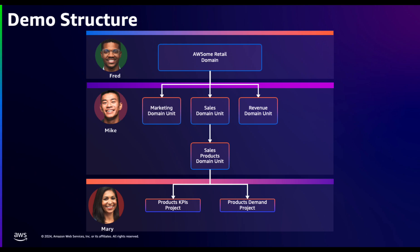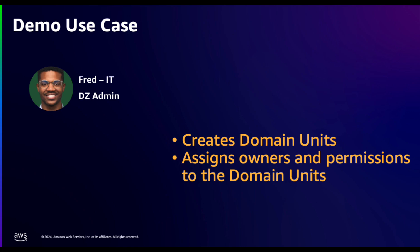This is the structure we're going to follow for this demo. Fred already created the Awesome Retail domain. Mike is going to create the sales domain unit and the sales product domain unit — the marketing and revenue domain units were already created. Mary is going to create the Product KPIs project and the Product Demand project, and she is also going to create a business glossary term.